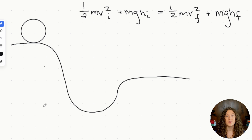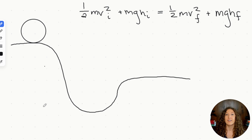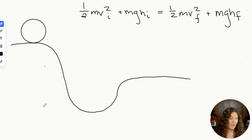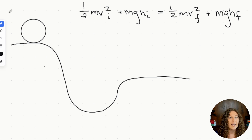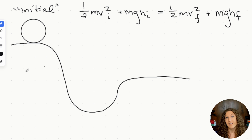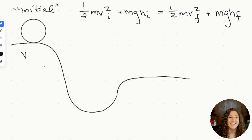Here we have a situation where a ball starts at rest at the top of a hill, rolls down, and reaches a final velocity. One assumption we can make on the MCAT is that the object always starts at rest in its initial phase — meaning initial velocity is zero.